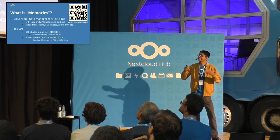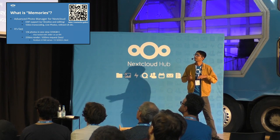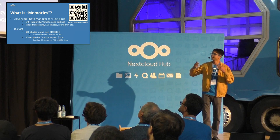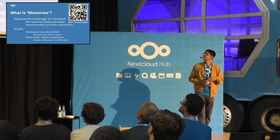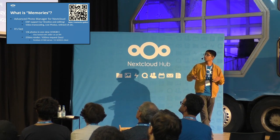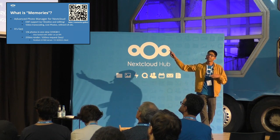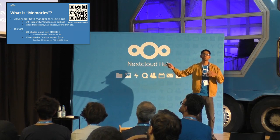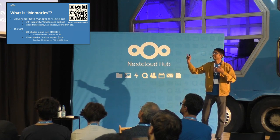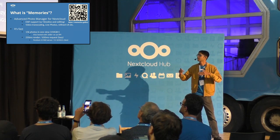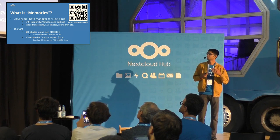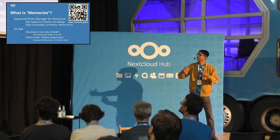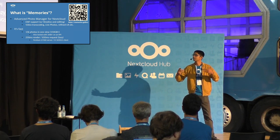So what is Memories? It's a community-supported, community-maintained photo manager for Nextcloud. It's got stuff like EXIF support, a timeline, editing of EXIF data, transcoding, live photo support, and so on. There's a demo there — if you think that's not very fast, it's because the server is in San Francisco. But Memories is fast. On a reasonably cheap server — $100 — it can render a timeline of 15,000 photos in just under a second.